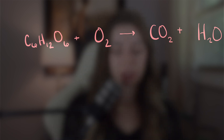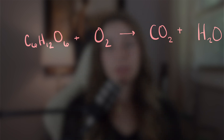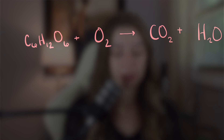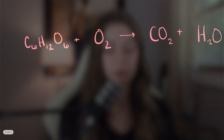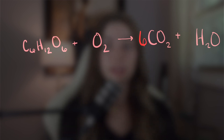So let's balance this equation right here — it's glucose plus oxygen yields CO2 and water. I'm going to start with what looks easy to balance first. There are six carbons on the left side of the equation, so there need to be six carbons on the right side. There's only one place where carbon appears, so I'm going to put a six in front of the CO2. Now my carbons are balanced.